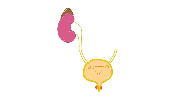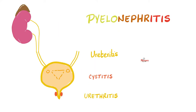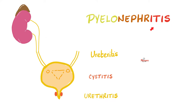Some anatomy: you have two kidneys, two ureters, one urinary bladder, one urethra. If I have bacteria in the urine with no symptoms, we call this asymptomatic bacteriuria. For most people it's no big deal, but during pregnancy it is a big deal. Infection in my urethra is called urethritis, in my bladder is called cystitis, in my ureters is ureteritis, and in my renal pelvis is called pyelonephritis. Pyelo means pelvis, nephro means kidney, itis means inflammation.